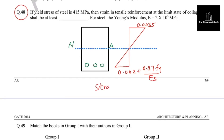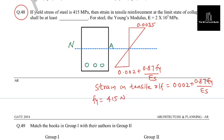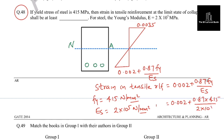The maximum strain in tensile reinforcement is 0.002 plus 0.87Fy divided by Es. With yield stress Fy equal to 415 N/mm² and Es equal to 2×10⁵ N/mm², the strain equals 0.002 plus 0.87 into 415 divided by 2×10⁵, giving you the required answer.